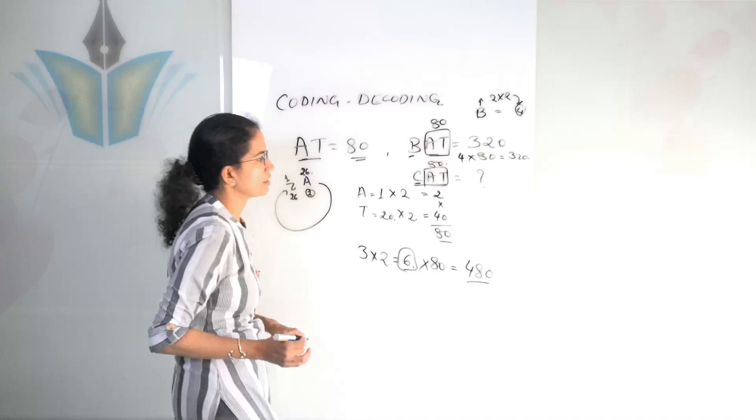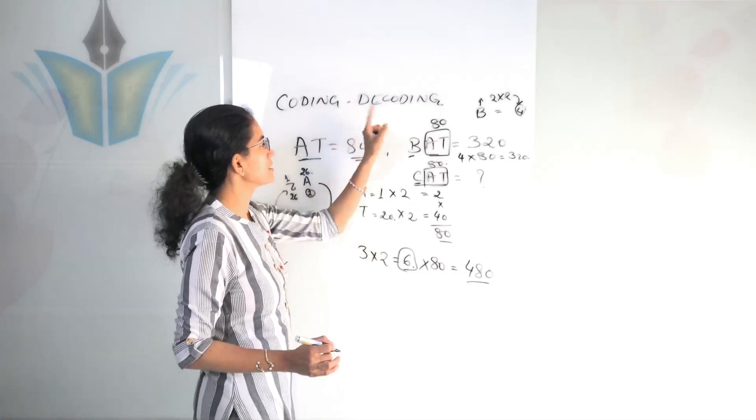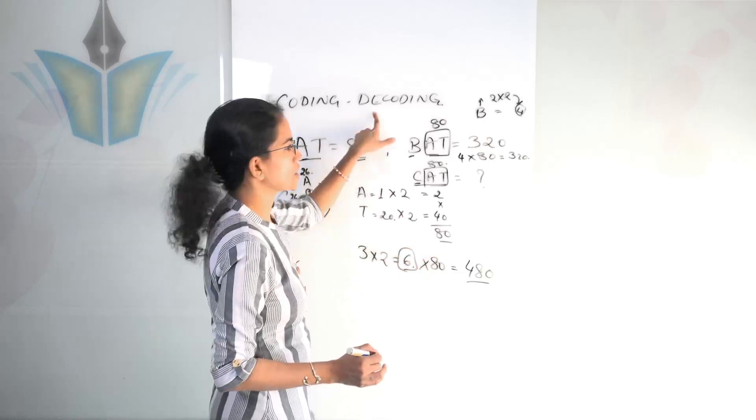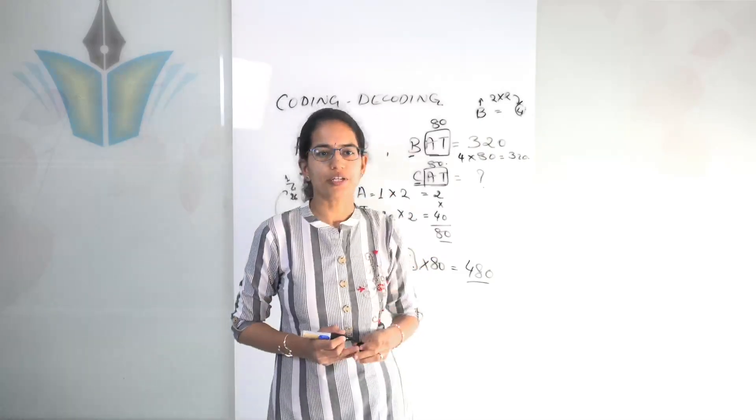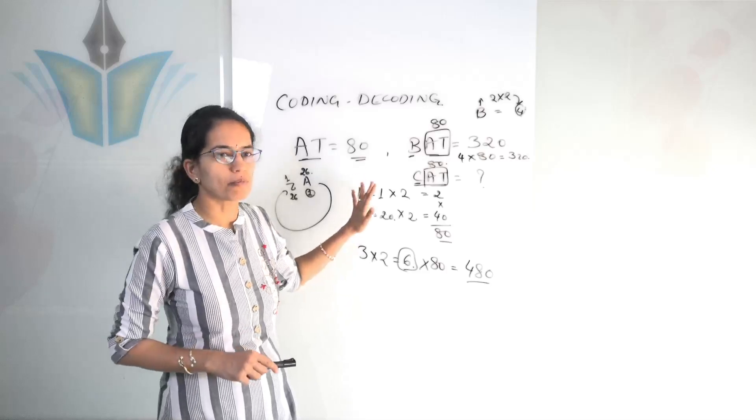So my answer here for CAT would be 480. And that's how we apply this way to solve the questions related to coding decoding. So this was a very simple method to solve coding decoding problems.